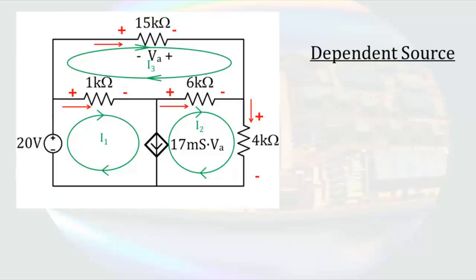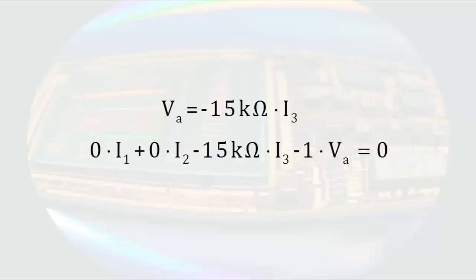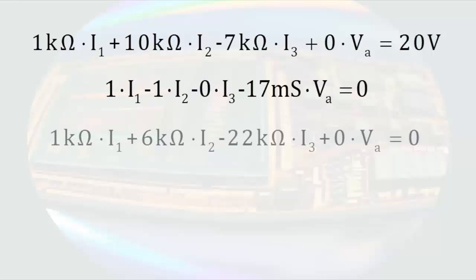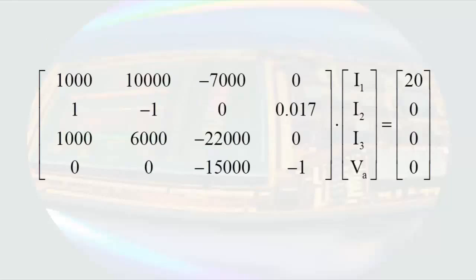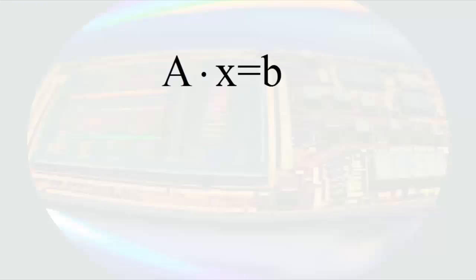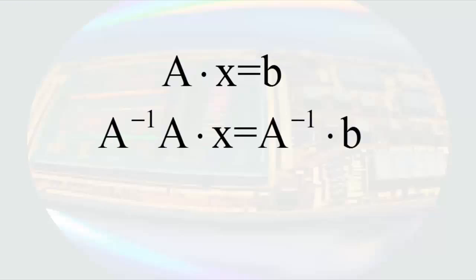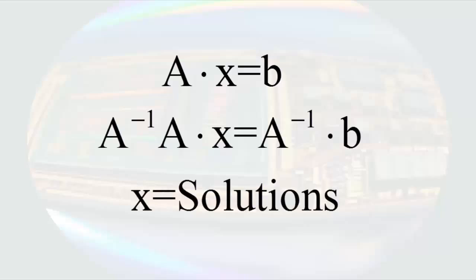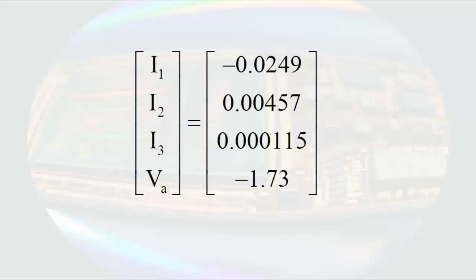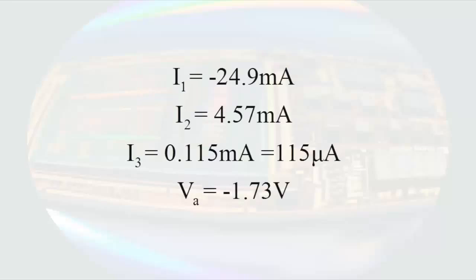The fourth equation comes from the controlling parameter of the dependent source — the voltage VA across the 15kΩ resistor. However, the polarity of VA differs from the polarity marked in red, so we add a negative sign: VA equals minus 15kΩ times I3. This can be rearranged for the matrix. Now we have four equations with four unknowns. We separate this into a matrix of coefficients times a column vector of variables equal to a column vector of constants — the form A times x equals b. Applying the inverse matrix gives us the column vector of solutions.